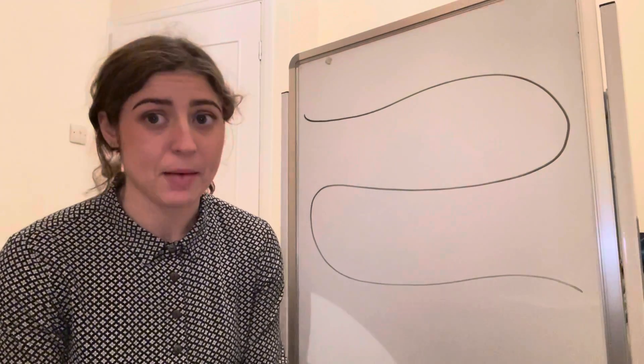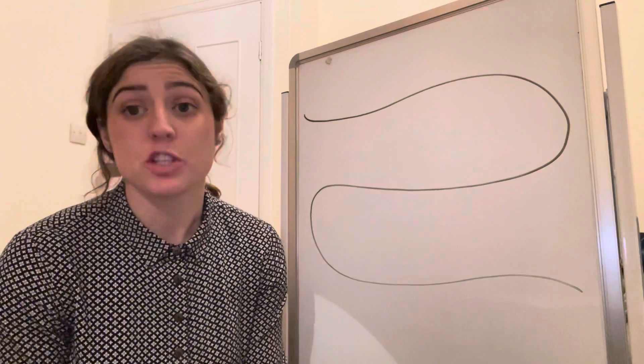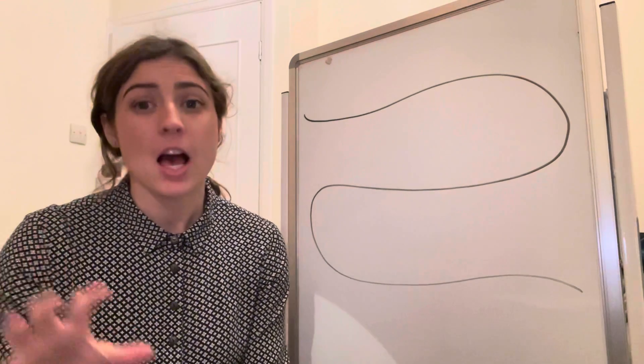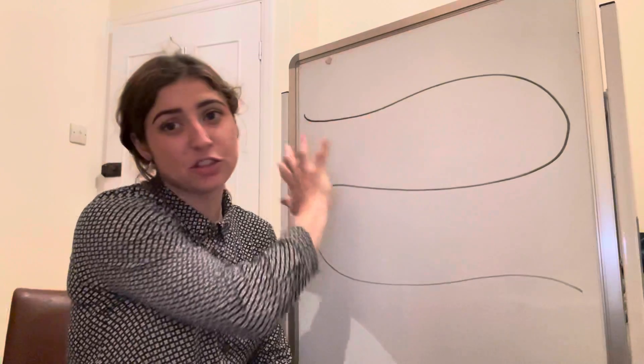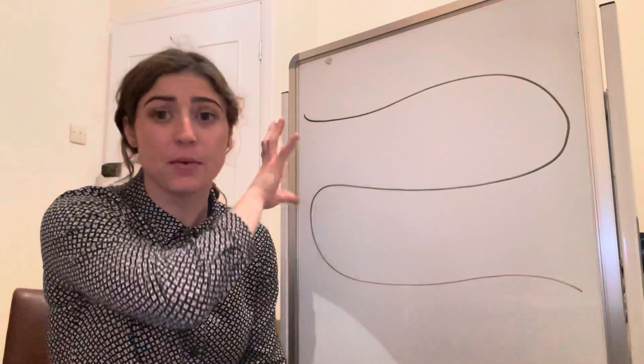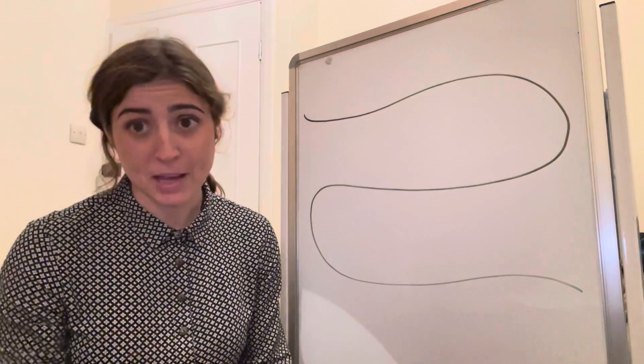A story map is very similar to sequencing a story with pictures, but a story map is when you draw it yourself. It's almost like a little journey and you can show the order of the book through pictures.